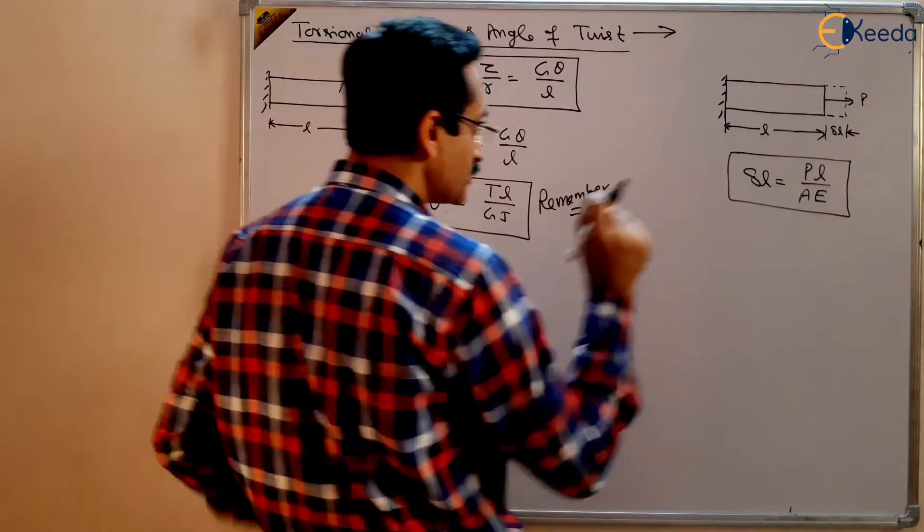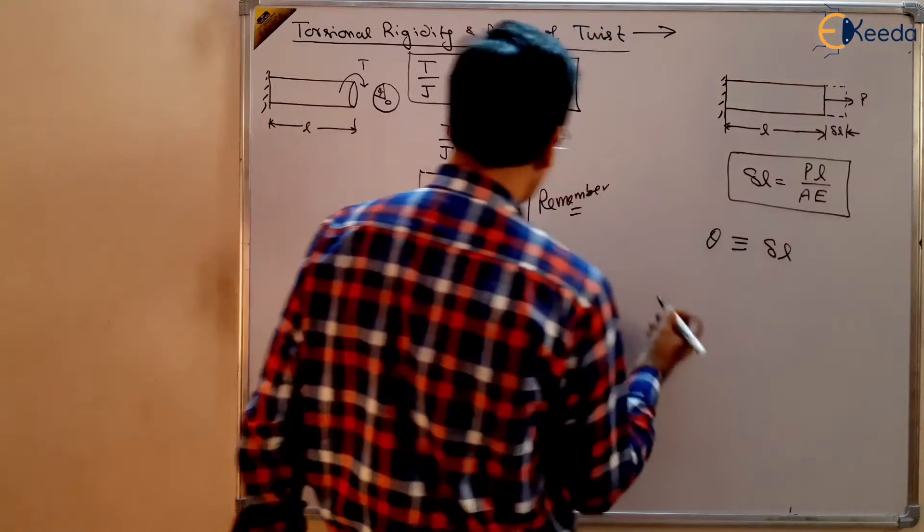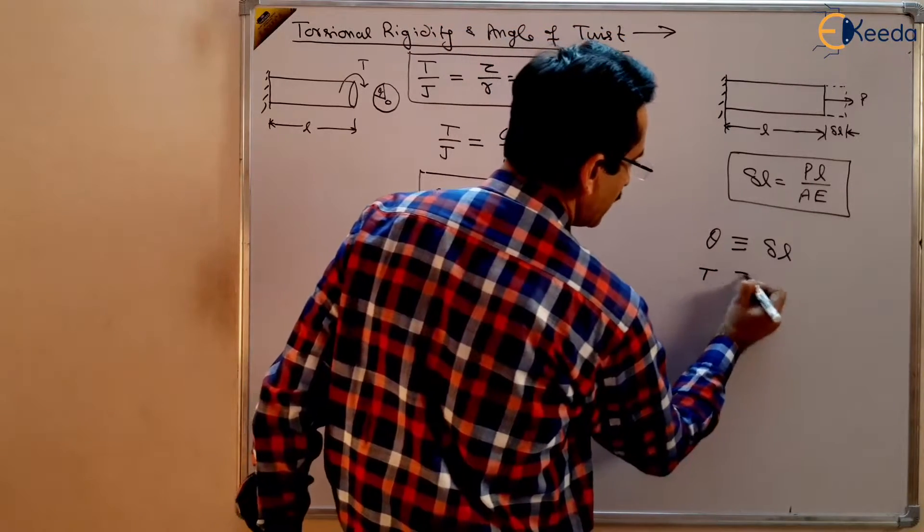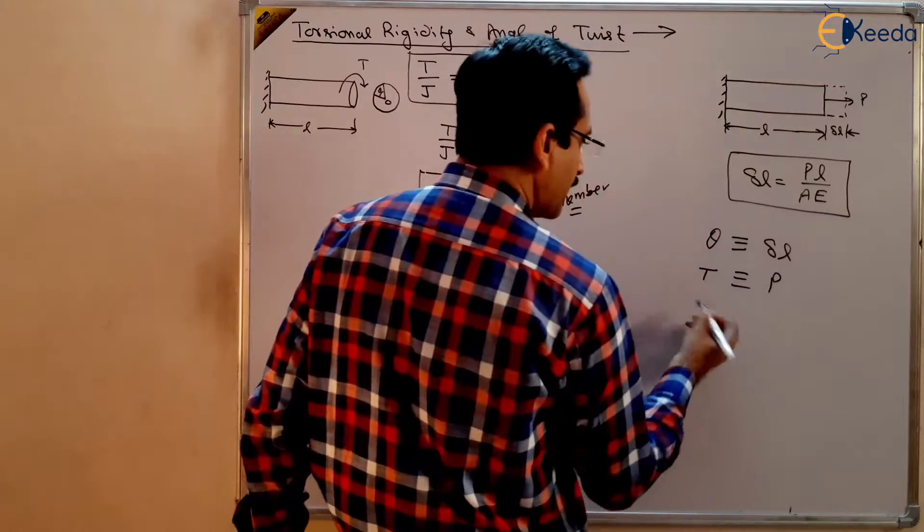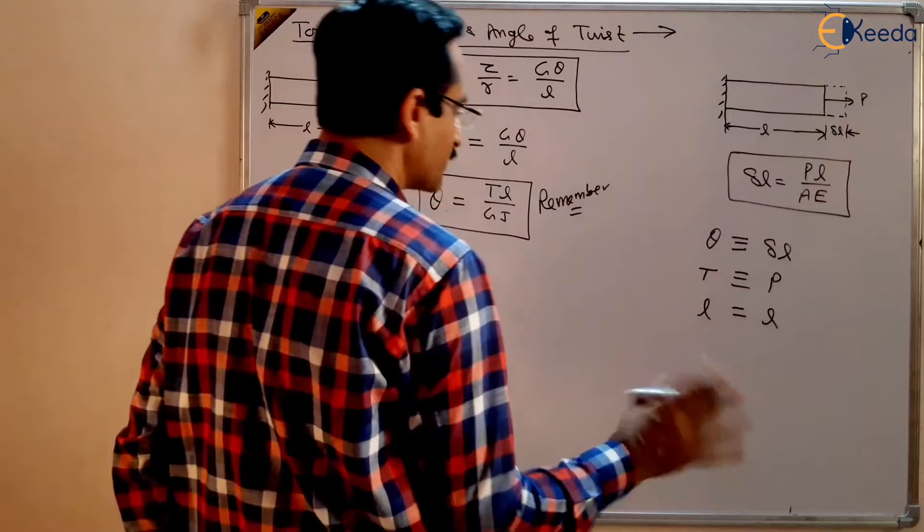G is analogous to E and J is analogous to A. So you should remember that theta is analogous to delta L, T is analogous to the load applied, L is equal to L in both cases.